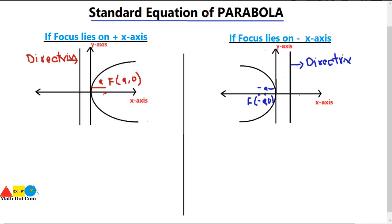Today we will learn the standard equation of parabola and how you can derive it. We don't have only a single standard equation of parabola, as its equation depends on the location of the focus. On the basis of the location of the focus, we divide the equation of the parabola into four types, as we have four quadrants.